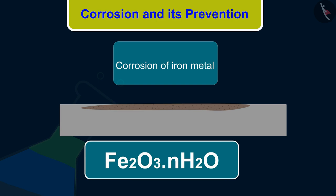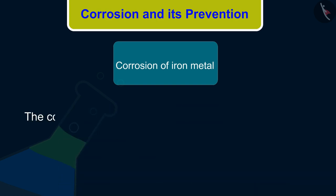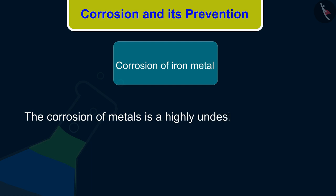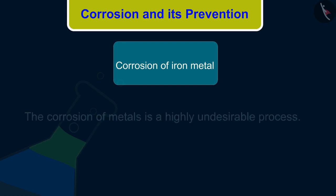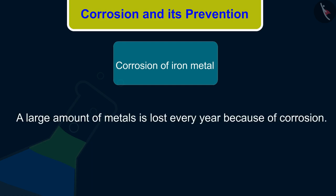The chemical formula for rust is Fe₂O₃·H₂O. The corrosion of metals is a highly undesirable process — a large amount of metal is lost every year because of corrosion.